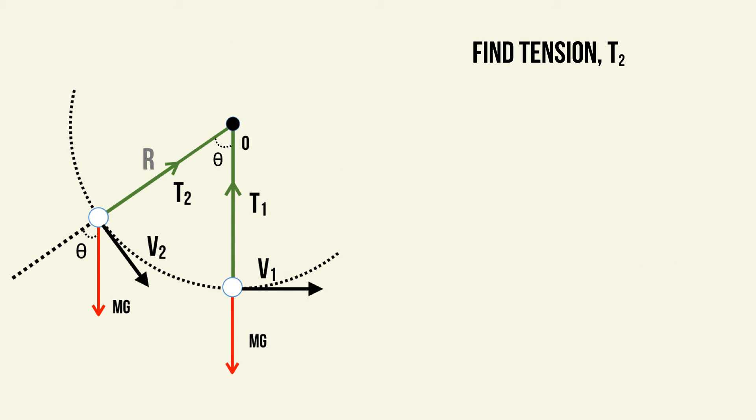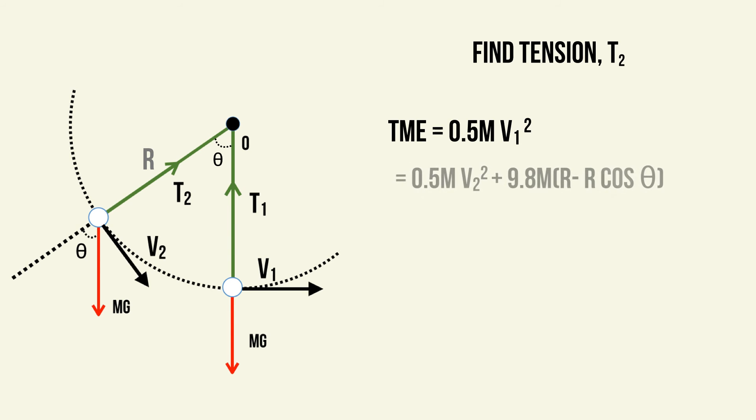Most common questions require you to understand the principle of conservation of energy and use it together with your knowledge of centripetal force and resolving radially. You may be asked to find tension T2 given velocity V1. From the previous video, total mechanical energy equals kinetic energy plus mgh at any position. At the bottom, total mechanical energy equals ½mv₁². Since energy is conserved, at the position where speed is V2, total mechanical energy equals ½mv₂² plus mgh.